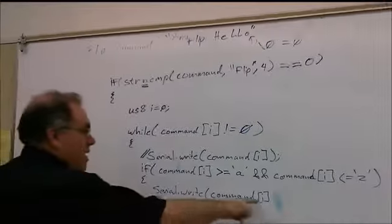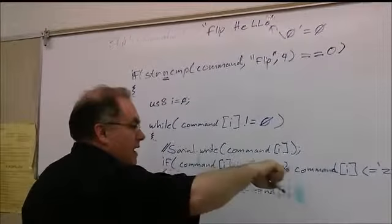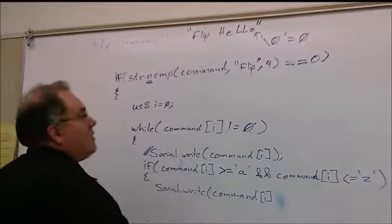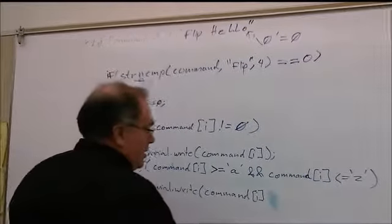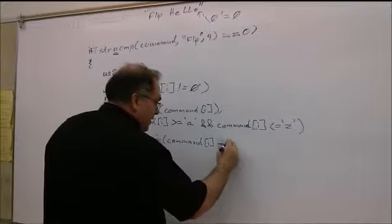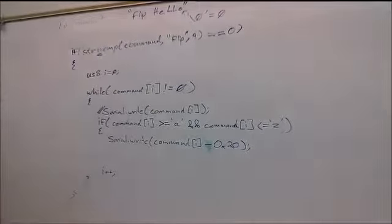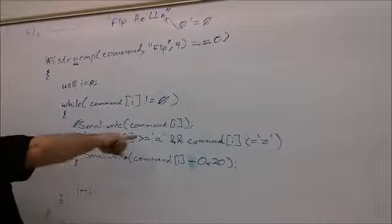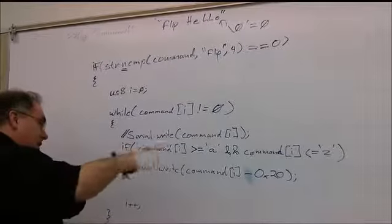So we want to print out whatever letter we found. So if we found a lowercase e, e is between lowercase a and lowercase z. So to get to a capital E, we need to subtract 32, or 0x20. So we could just say subtract 0x20, and that will convert the lowercase to the uppercase. Okay, if it's not lowercase...